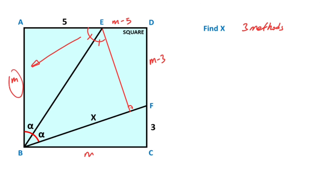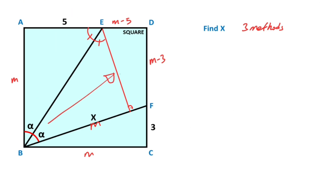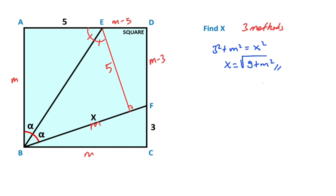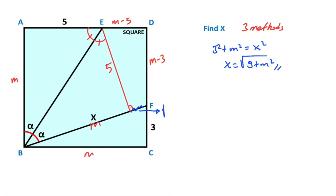So if there is an m unit opposite side of this angle, the opposite side of the same angle must also equal m units. Likewise, if there are 5 units opposite the side of alpha, the opposite side of alpha must also equal 5 units. Then if you focus on this triangle and apply the Pythagorean theorem: 3 squared plus m squared equals x squared, so x equals the square root of 9 plus m squared. If here is m, that means the square root of 9 plus m squared minus m is left here.